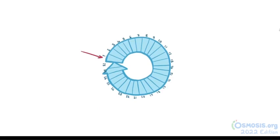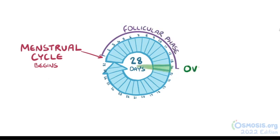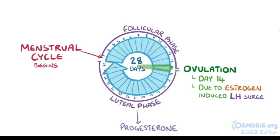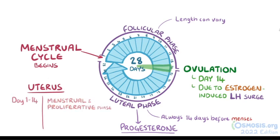As a quick recap: the menstrual cycle begins on the first day of menstruation. For an average 28-day cycle, the changes in the ovary during the first 14 days are called the follicular phase. Ovulation usually occurs at day 14 as a result of the estrogen-induced surge in luteinizing hormone. The last 14 days are the luteal phase, during which progesterone becomes the dominant hormone. While the length of the follicular phase can vary, the luteal phase almost always precedes the onset of menses by 14 days. The uterus also goes through its own changes: during the first 14 days the endometrium goes through the menstrual and proliferative phases, and during the last 14 days it goes through the secretory phase.